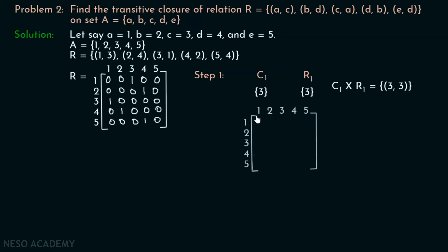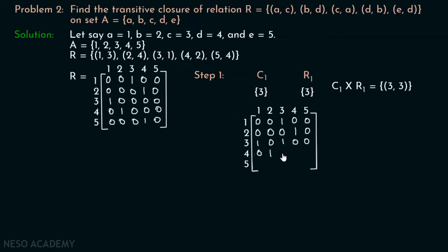This is the new matrix after Step 1. In Step 2, we consider column 2 and row 2. In column 2, the value 1 is at position 4, so C2 = {4}. In row 2, the value 1 is at position 4, so R2 = {4}. Therefore C2 × R2 = {(4,4)}, and we place 1 at position (4,4) by replacing the existing 0 with 1.